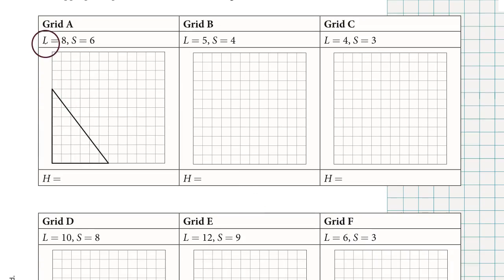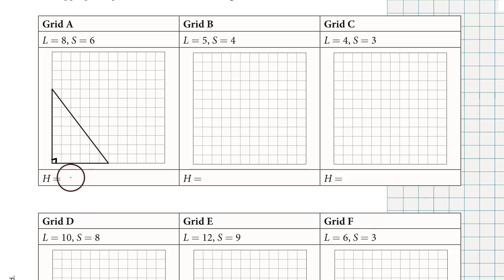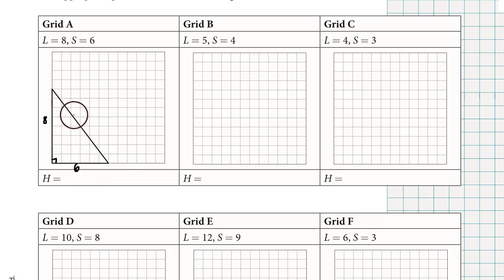The longer of the two legs is 8 units — from the bottom corner going up is 8 units long. The shorter of the two legs is 6 units, from the bottom corner going to the right. The hypotenuse is drawn, and this is a right triangle with a square box corner. The long leg was 8 and the short leg was 6, so we can use the Pythagorean theorem to find the hypotenuse.